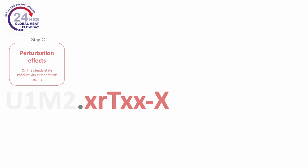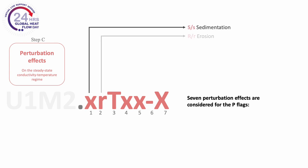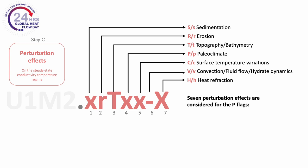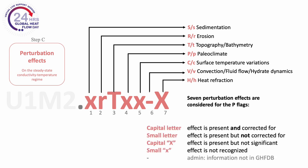The third step considers potential perturbing effects, independent of technical uncertainties and methodological reliability. Seven different perturbing effects are considered for the P flags: sedimentation, erosion, topography or bathymetry, paleoclimatic effects, surface temperature variations, convection or fluid flow dynamics, and heat refraction. For each effect, a capital or lowercase letter is assigned, which indicates whether the effect is considered or known to have an impact on the heat flow and whether the effect is corrected for or not.